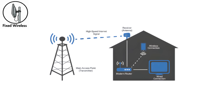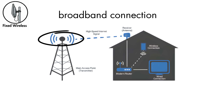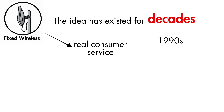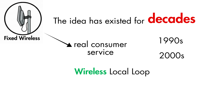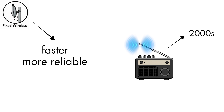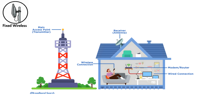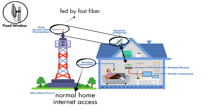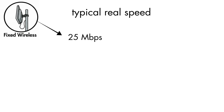Fixed Wireless Internet is a broadband connection that uses focused radio signals instead of cables. It started becoming a real consumer service in the late 1990s and early 2000s through early wireless local loop systems. As radio technology improved through the mid-2000s, fixed wireless became faster, more reliable, and a practical alternative for areas without wired broadband. The system works through a direct line-of-sight link: providers place broadcasting equipment on towers or rooftops, fed by fast fiber connections, and a small outdoor antenna is installed at the home. Once the signal reaches the antenna, it travels through an Ethernet cable into an indoor modem or router, giving you normal home internet access.